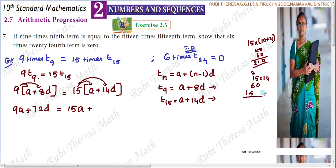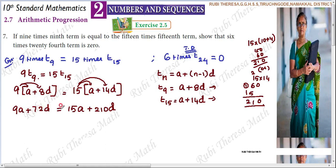15 into 10 is 150, and 15 into 4 is 60, so 150 plus 60 is 210. Therefore 15 into 14 is 210, giving us 210d. So our equation becomes: 9a plus 72d equals 15a plus 210d.